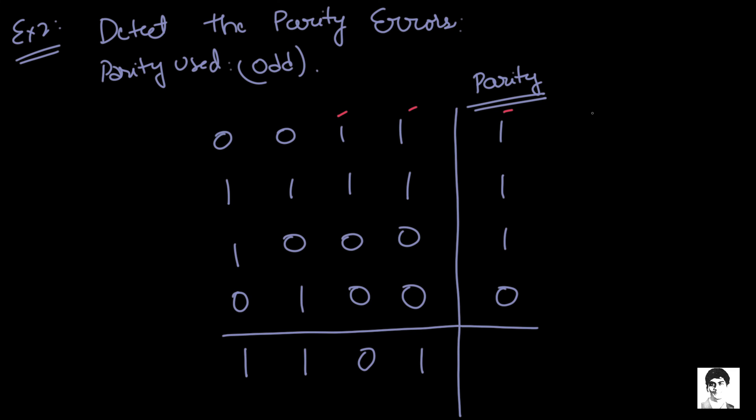Looking at the first row, we have three ones, which is odd, so there is no error. The second row has five ones, which is odd, so no error. The third row has two ones, hmm, this is even. So this is going to give an error. And finally, coming to the last, there is only one one, which is fine. So in the third row, we have an error.